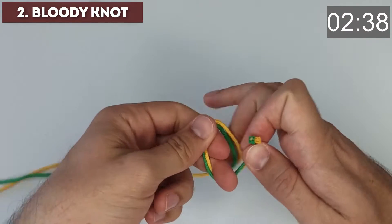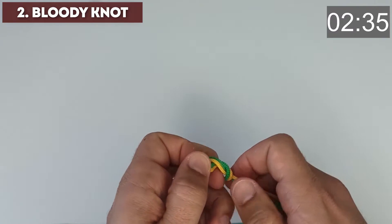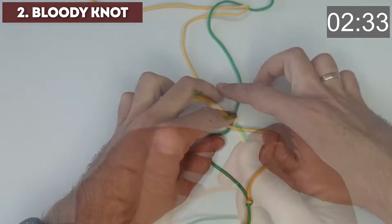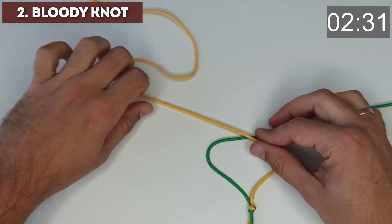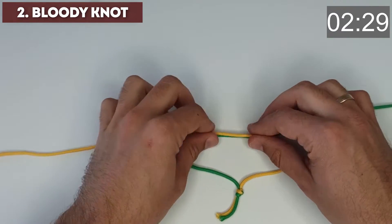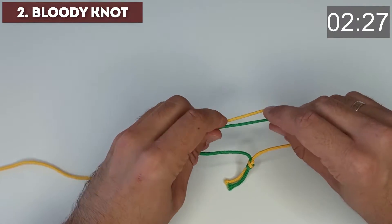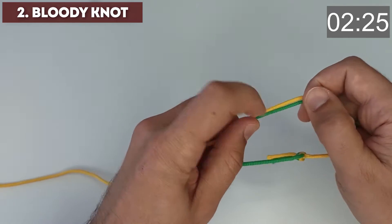Bloody knot. Connect two lines and tie one temporary knot. Make a triangle and wrap the fishing line together 5 times.